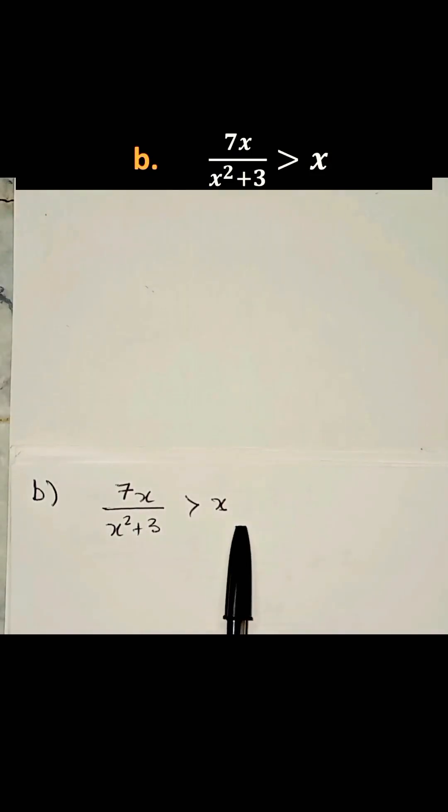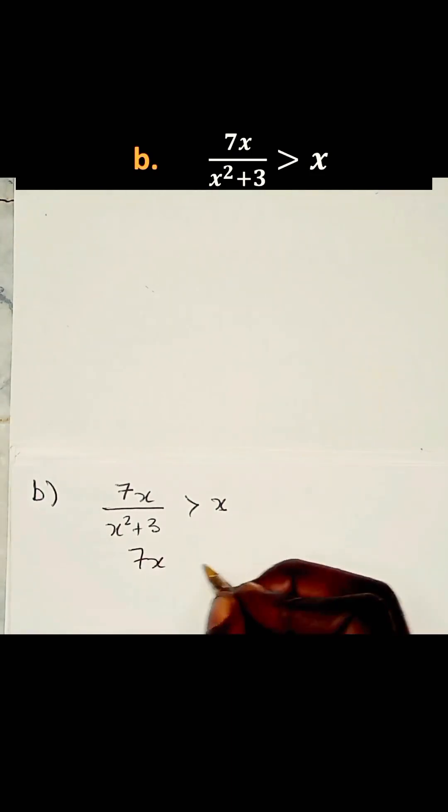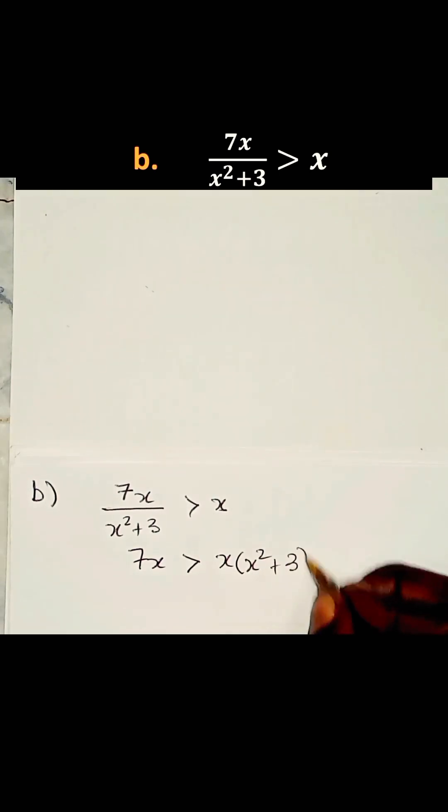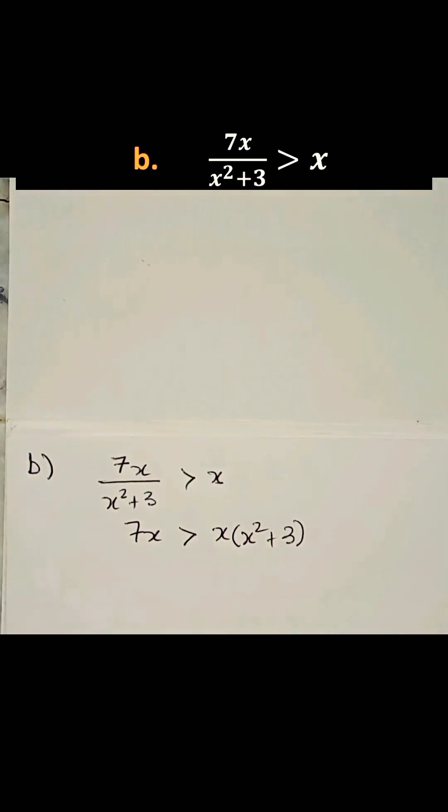We shall multiply throughout this inequality by x² + 3 to get 7x is greater than x multiplied by x² + 3. Now let's expand the right hand side. We have 7x is greater than x³ + 3x.